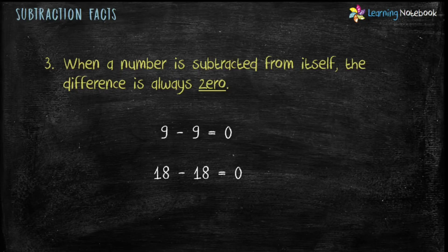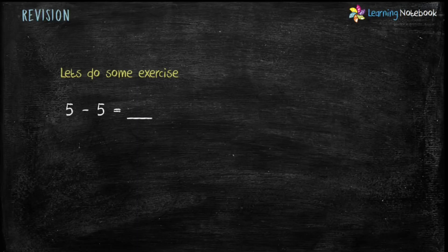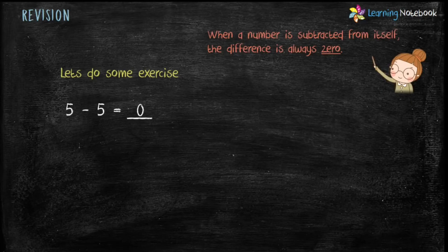For example, 9 minus 9 equals 0, and 18 minus 18 equals 0. Now let's do some exercises based on these subtraction facts. First: 5 minus 5 equals ___. The answer is 0, because when a number is subtracted from itself, the difference is always 0.